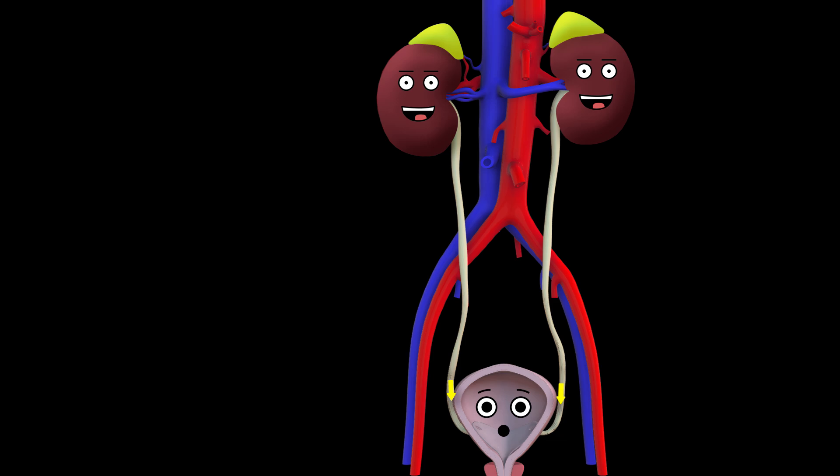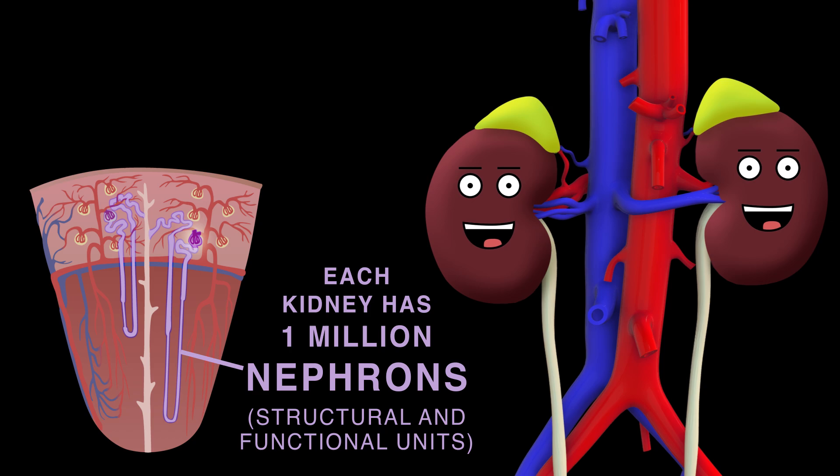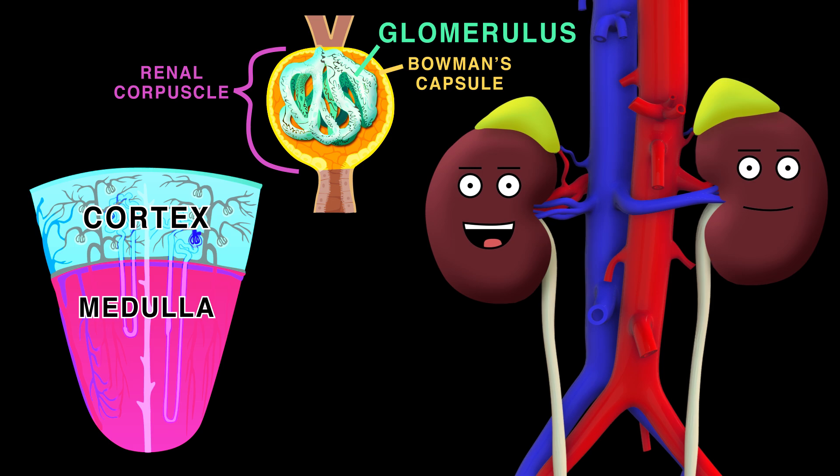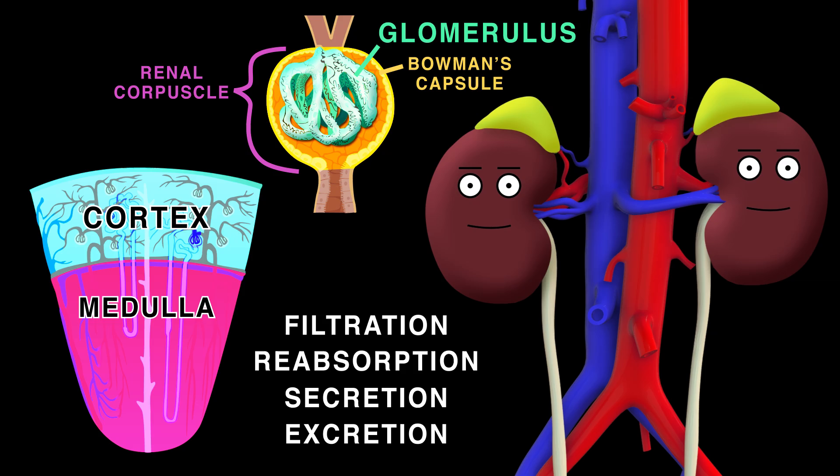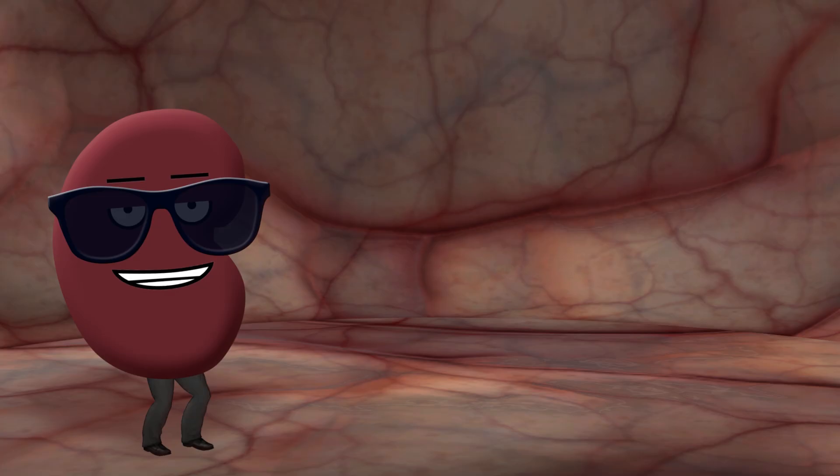We have a million nephrons, which are structural and functional units. At the nephron start, filtration occurs in the glomerulus, spanning the cortex and medulla. Nephrons bear the burden of filtration, reabsorption, secretion, and excretion to produce urine.